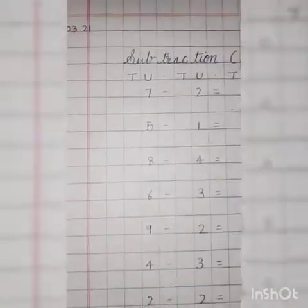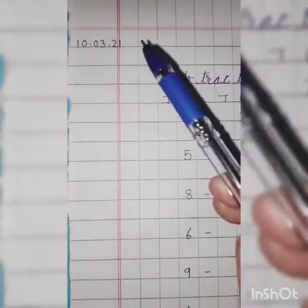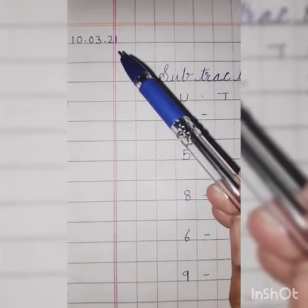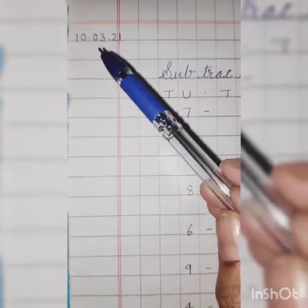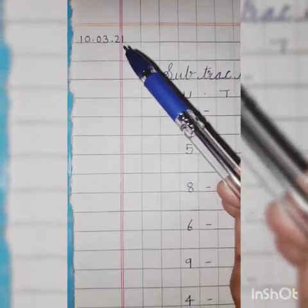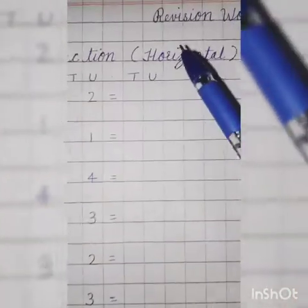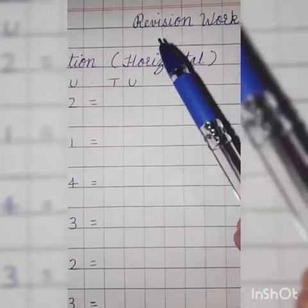Good morning kids. Today I am going to take your maths class and we are going to do practice of addition and subtraction from book number 3. Let's start today's class. Kids, take out your maths notebook. Mention today's date — today is 10th of March 2021. Right side.